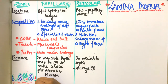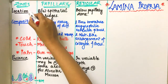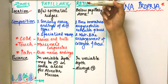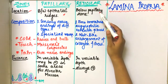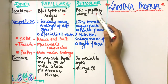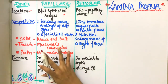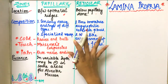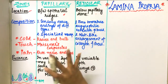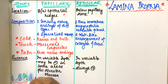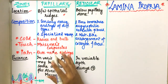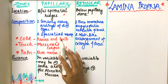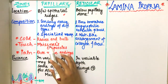So according to location, the papillary zone is the portion between the epithelial ridges, and the reticular zone is below the papillary zone. Both of these zones are in continuum with each other — they are not separated by any factor.